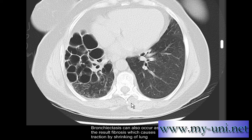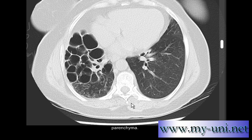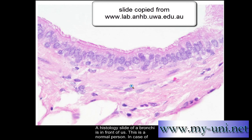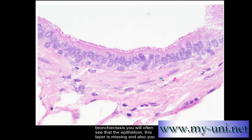Bronchiectasis can also occur as a result of fibrosis, which causes traction by shrinking of lung parenchyma. Instead of infection, anything that causes fibrosis will shrink lung volume and pull attached structures including the bronchial walls. This is a normal histology slide of a bronchial wall. In a patient with bronchiectasis, you would see the epithelium missing or damaged and inflammatory changes in the submucosa.